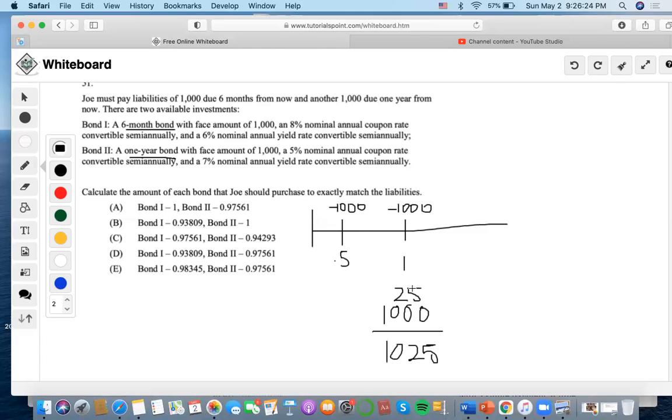Since this bond is worth $1,025 at year one and we need to finance $1,000, to exactly match the liabilities we only need $1,000 worth of this one-year bond.